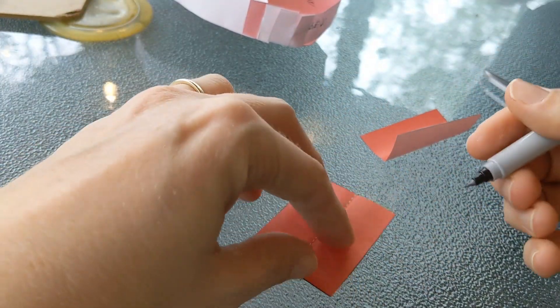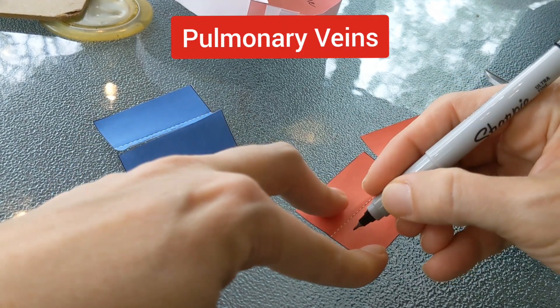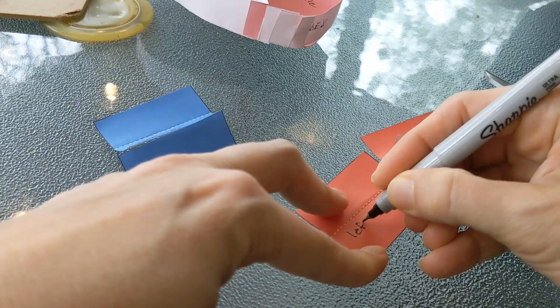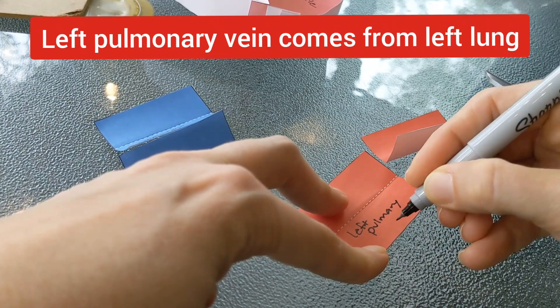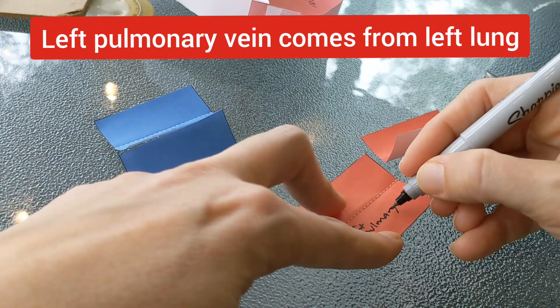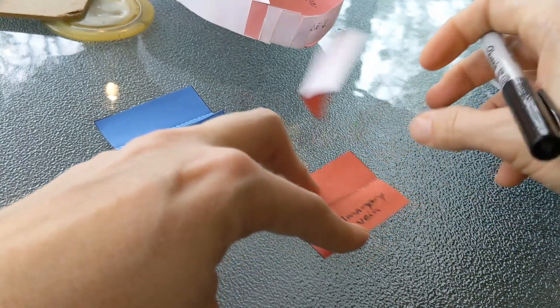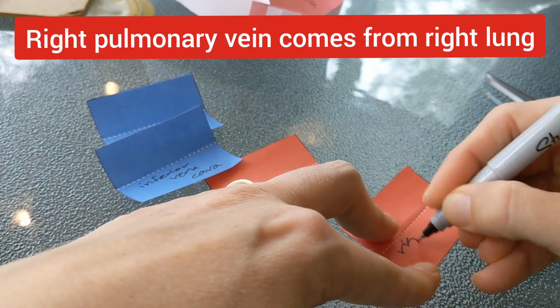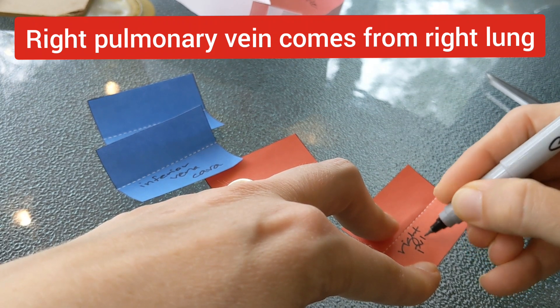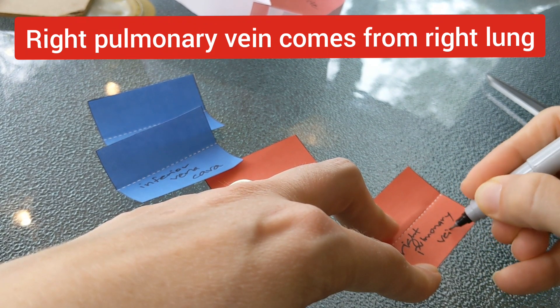On the left side of the heart we have the pulmonary veins and they're coming from each lung. So let's label one the left pulmonary vein. This is the one, oh I spelled pulmonary wrong, pulmonary. This is the one coming from the left lung and we have the right pulmonary vein that's coming from the right lung.